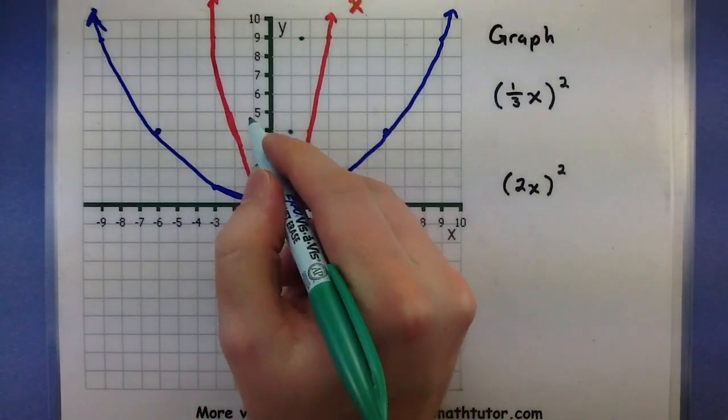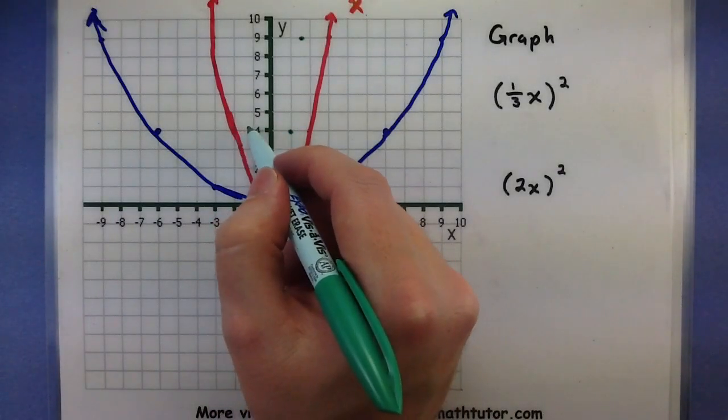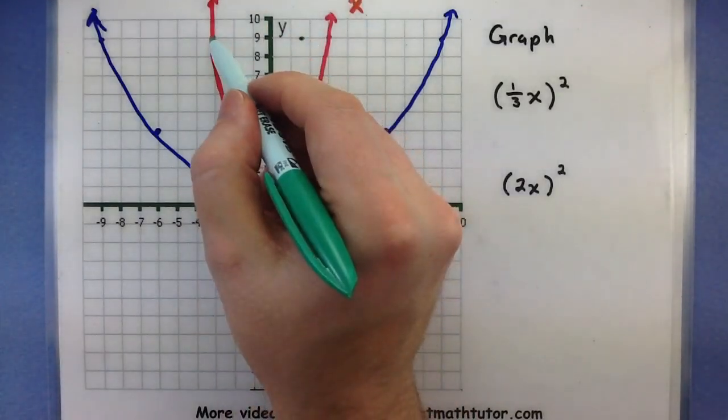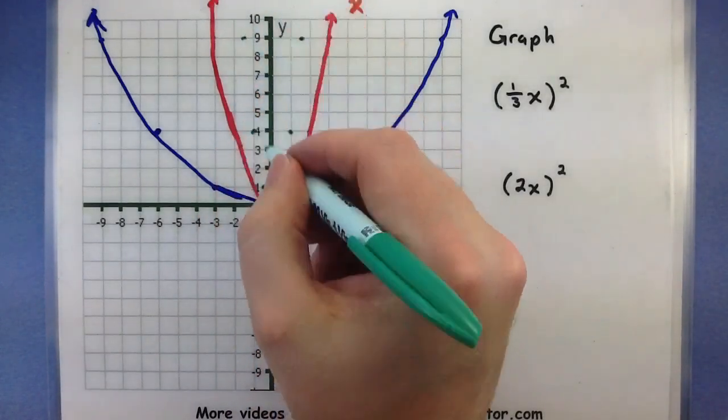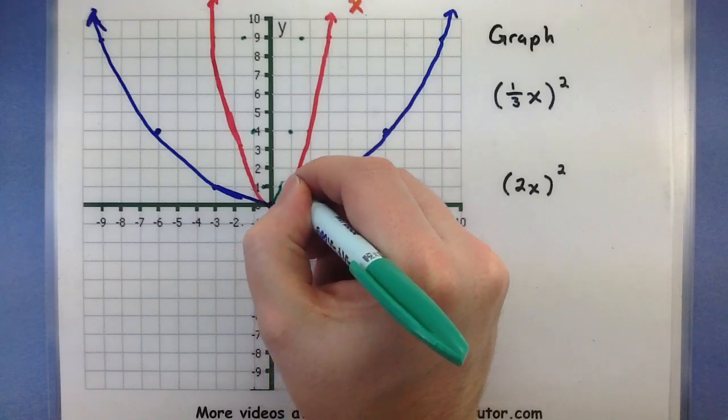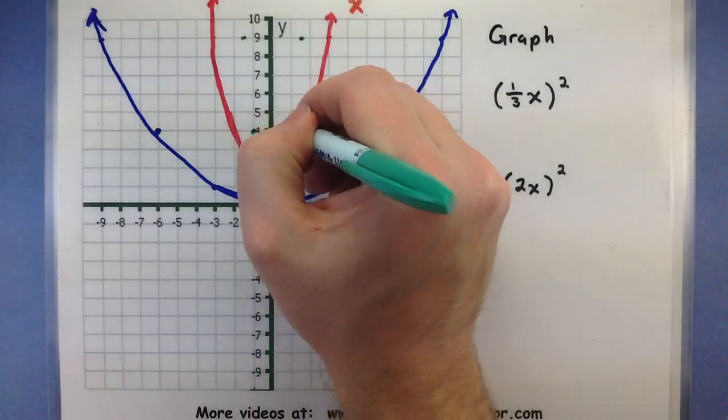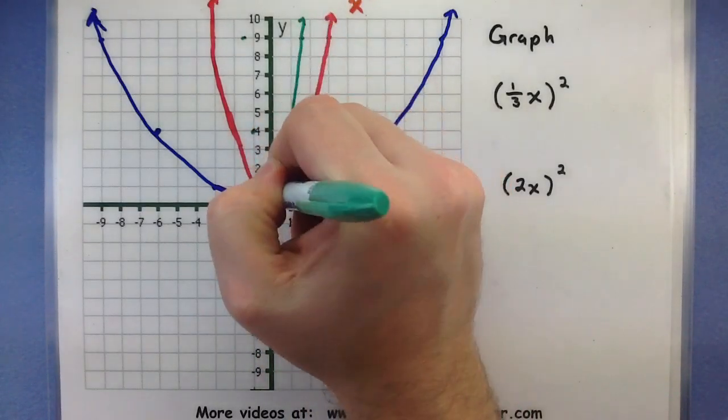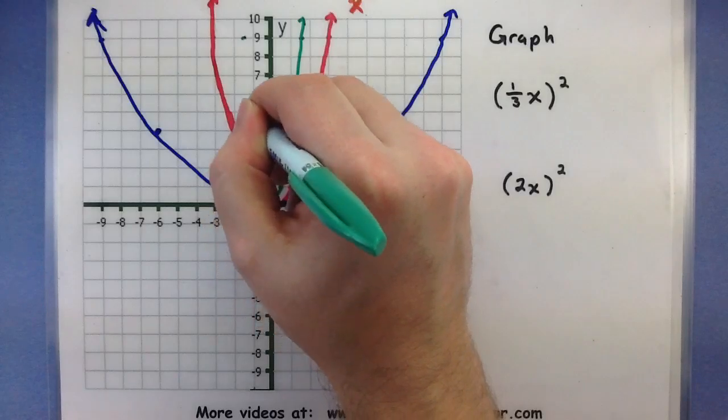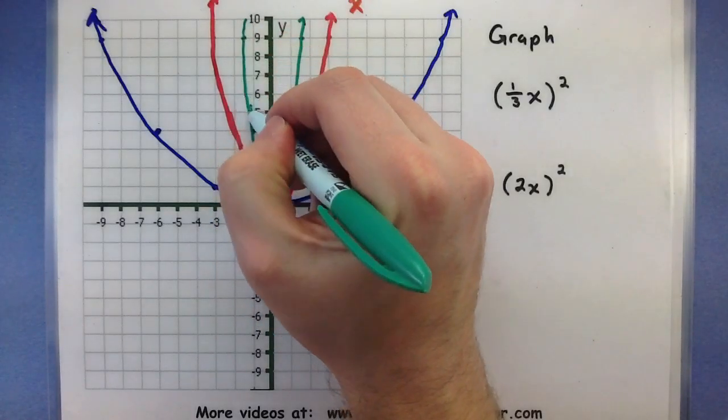All right, do the same thing with the points on the other side. So negative 2, chop it in half, negative 3, chop it in half. Now we have some good key points and we can draw out our new transformed function. This one still looks like a parabola, but it's a lot more narrower than the parent function.